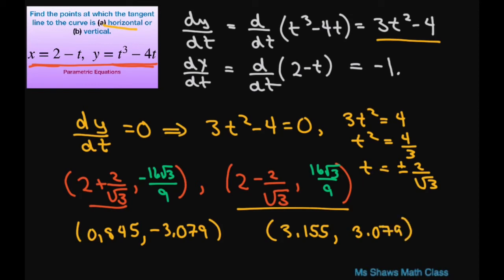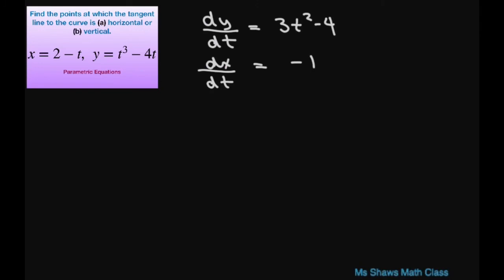Alright, now for the vertical part. So for the vertical part, we have the derivative of x with respect to t has to be 0. But it doesn't equal 0. 0 does not equal negative 1 for all of x.